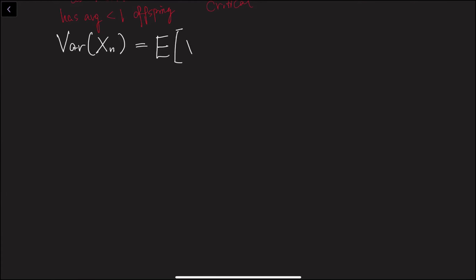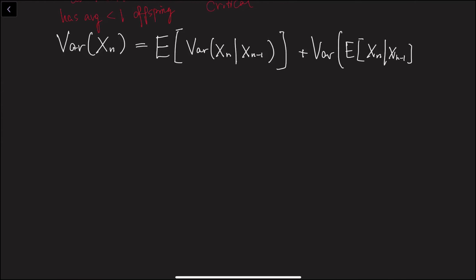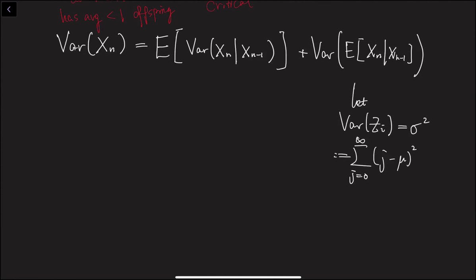It comes from two sources. The first source is the variance of this random variable — we take expectation. The second source is the expectation of this conditioning — we take variance. We let the variance of the number of offspring produced by a single individual be σ², defined as the sum from j equals zero to infinity of (j minus μ)² times the probability of j.